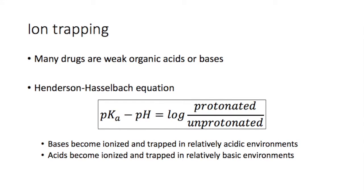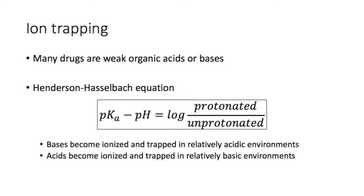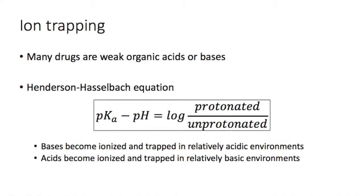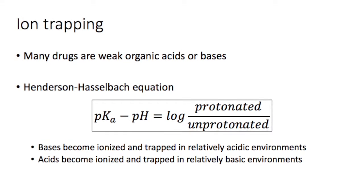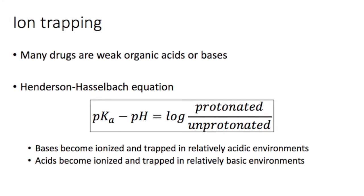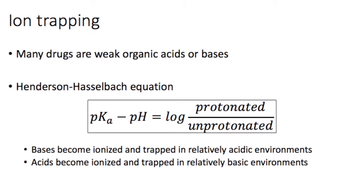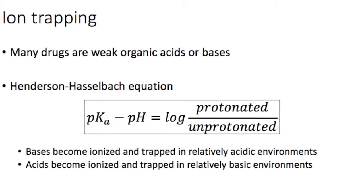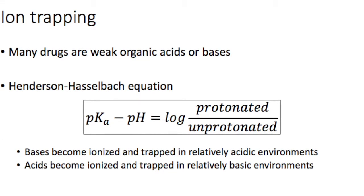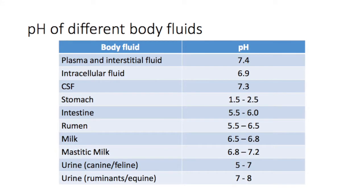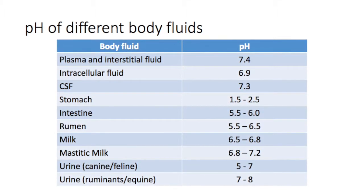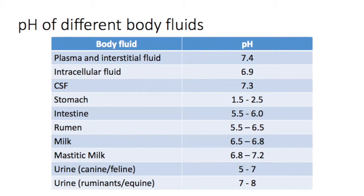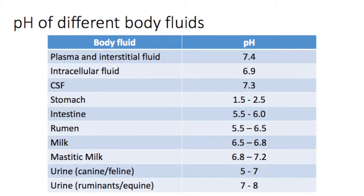Now let's talk about ion trapping. Many drugs are either weak organic bases or acids, meaning they can become ionized. The proportion of ionized to unionized molecules depends on the pH of the environment relative to the pKa of the molecule, calculated using the Henderson-Hasselbalch equation. A higher proportion of a weak organic base becomes ionized in a relatively acidic environment, whereas a higher proportion of weak organic acids become ionized in a relatively basic environment. Once ionized, the drug cannot diffuse out of a tissue and becomes trapped there. The pH of body fluids can range from as low as 1.5 in the stomach of carnivores to as high as 8 in the urine of herbivores, so some drugs get trapped in compartments like milk or urine, leading to higher concentrations compared to plasma.